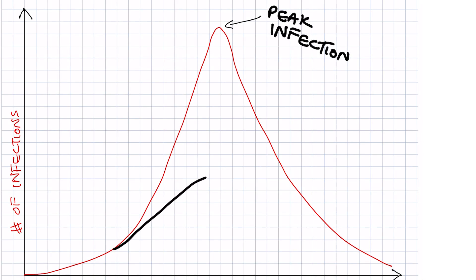Flattening the curve refers to stretching out the curve so that there isn't that sharp exponential rise. You could fairly ask why it matters if the curve is flat or not. If we just let the pandemic play itself out undeterred, the curve will eventually fall back down again, and the pandemic will eventually die out anyway.